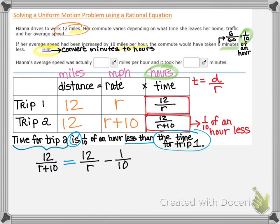Now we have our equation written. Now we know what to do. Now we just have to solve the rational equation. This should hopefully make you think about finding the LCD. And the LCD in this case would be 10 times R times R plus 10.